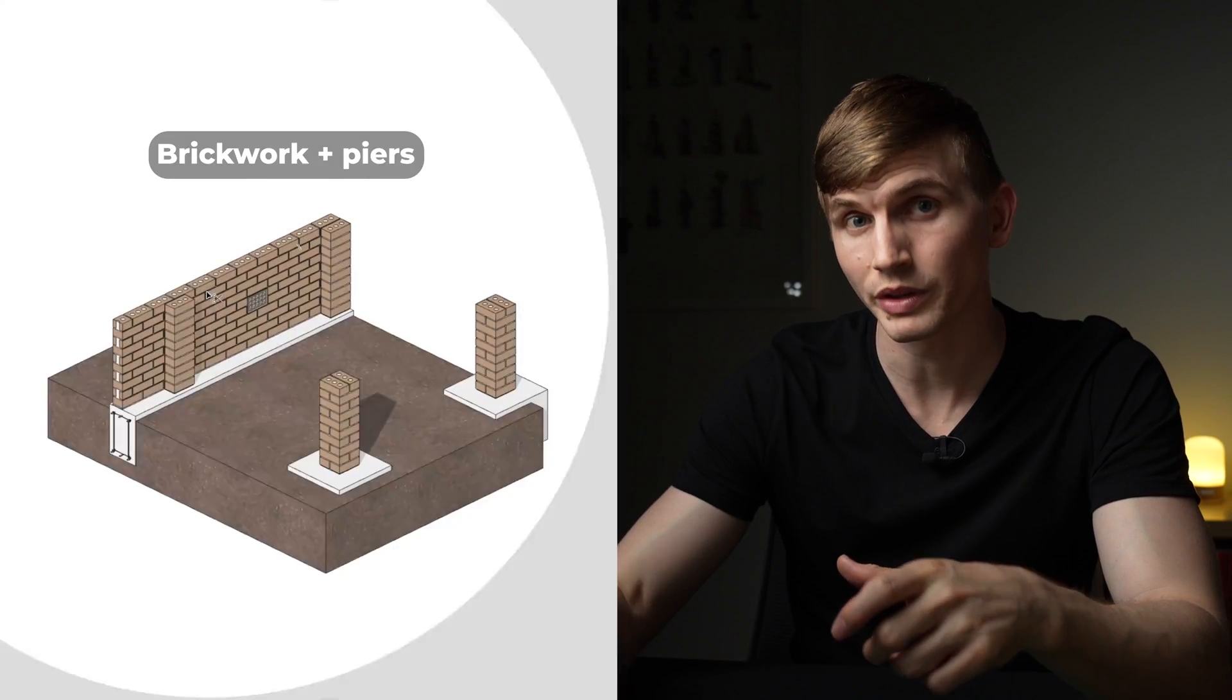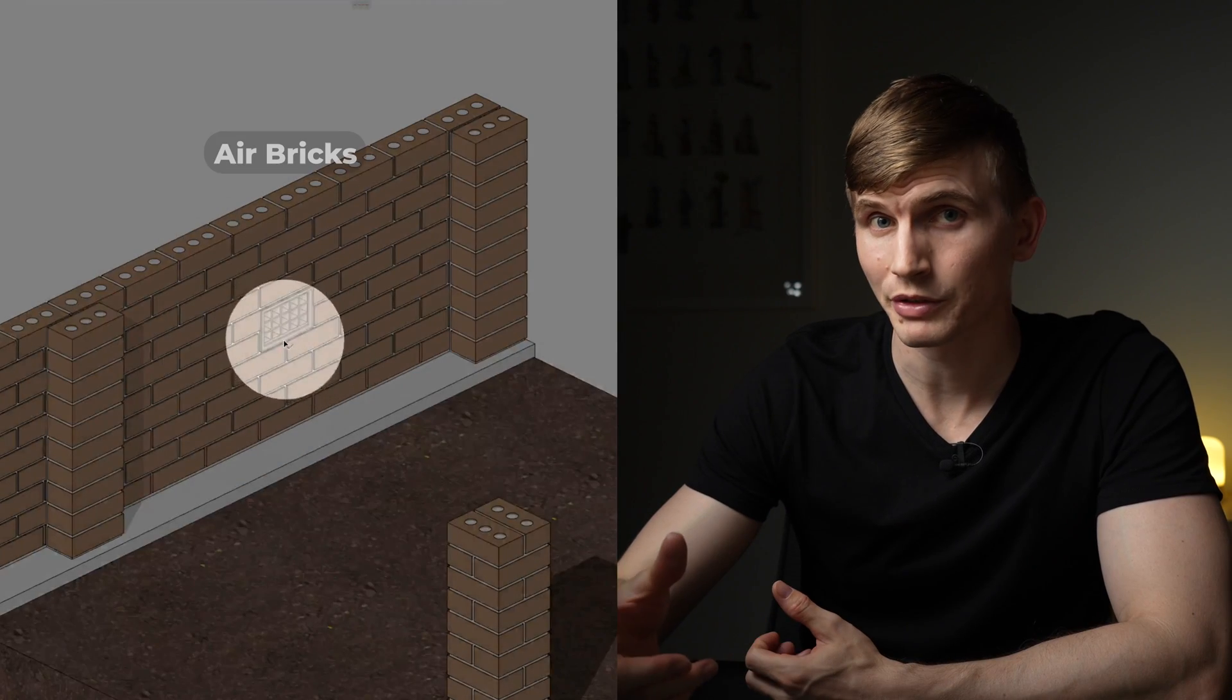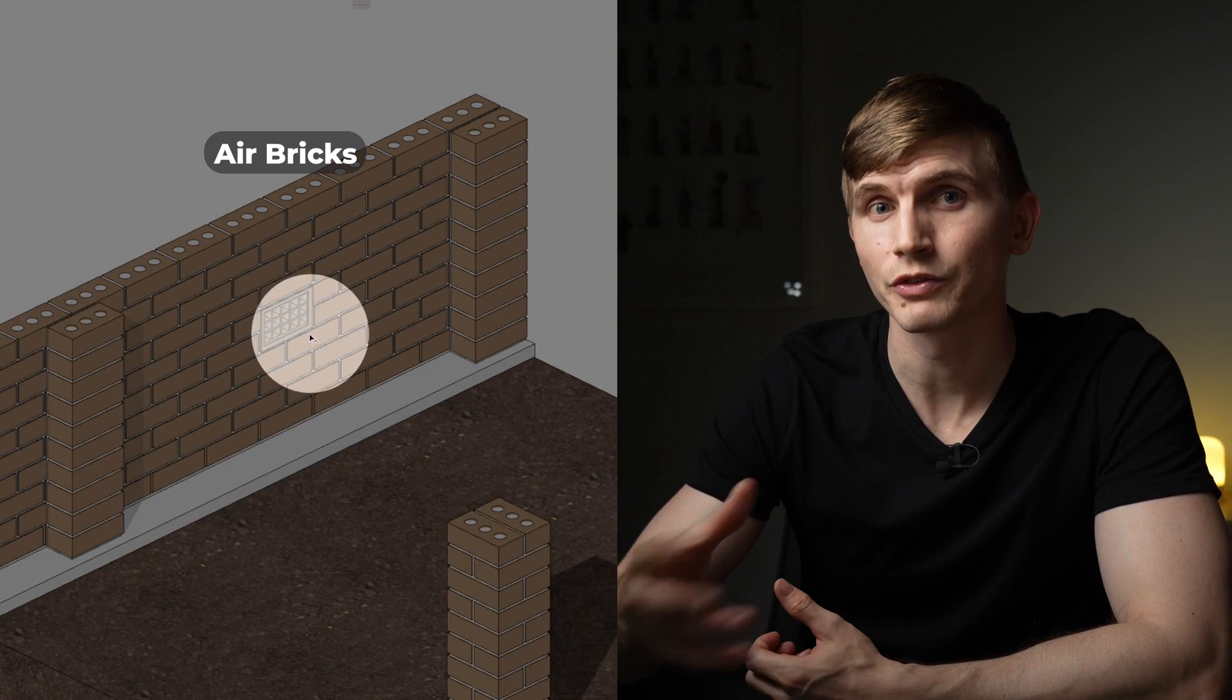The external brick skin is laid with engaged piers bonded to it. Air bricks, also known as brick vents, are added for subfloor ventilation.